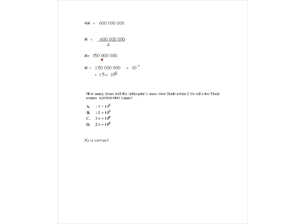The answers are given in scientific notation, so we convert 150 million. Step 1: place the decimal to create a number between 1 and 10 — that gives 1.5. Step 2: count the digits to the right of the decimal point — there are 8. So in scientific notation, 150 million equals 1.5 times 10 to the 8. The answer is A.